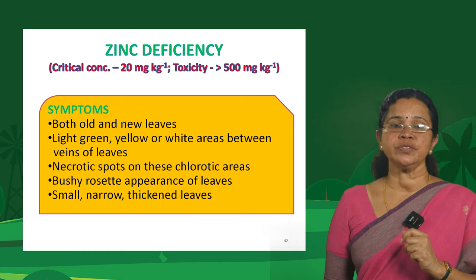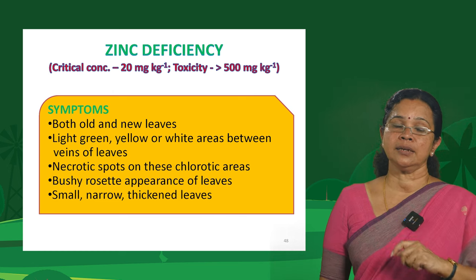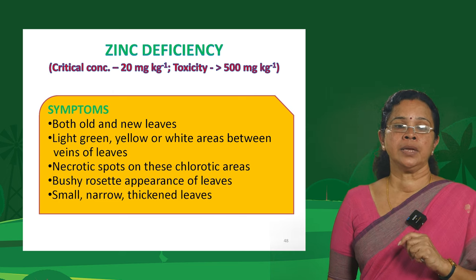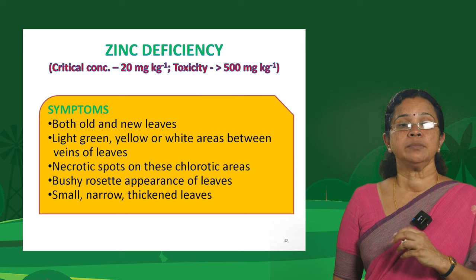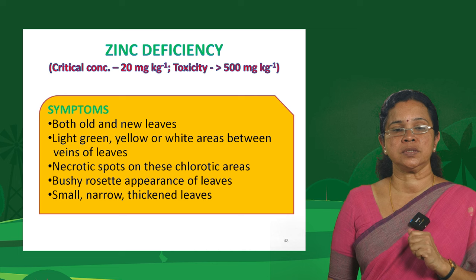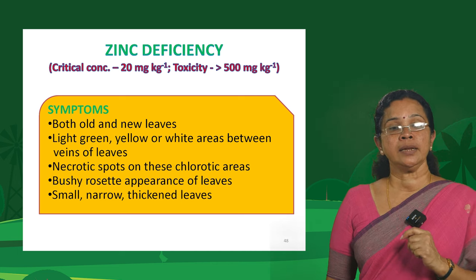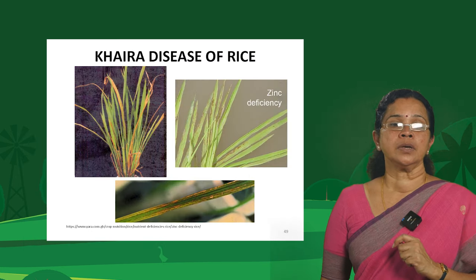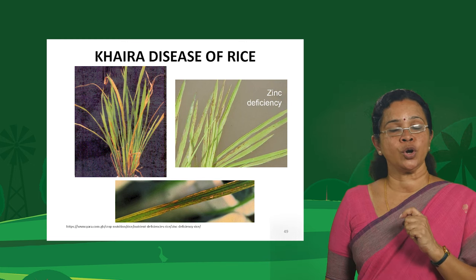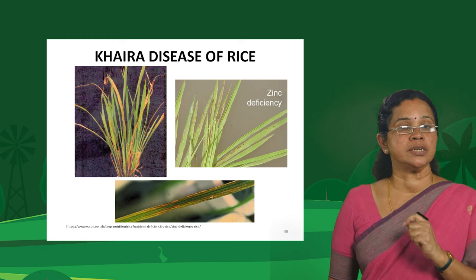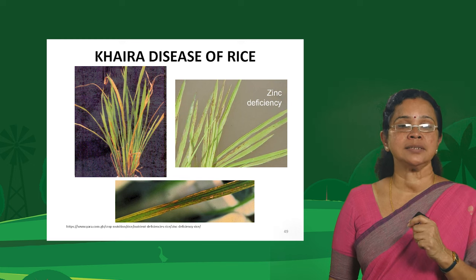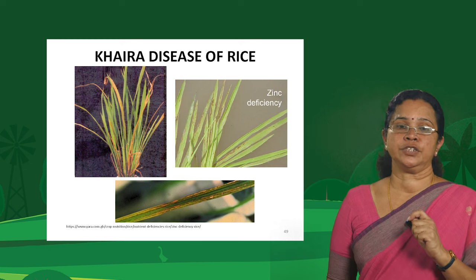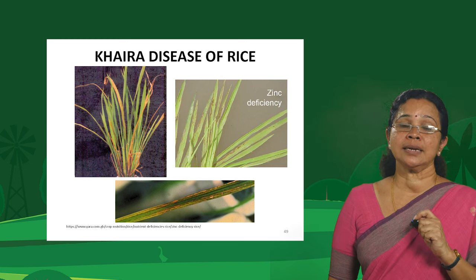Symptoms of zinc deficiency can appear in both old and new leaves — not confined to just old or just young leaves. Symptoms appear as light green, yellow or white areas between the veins — some sort of intervenal chlorosis — with necrotic spots visible in chlorotic areas. A rosette or bushy appearance of leaves develops, and the leaves become small, narrow and thick. The khaira disease of rice was identified in the early 1960s as a disease but was later confirmed to be due to zinc deficiency.